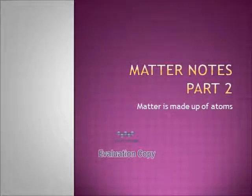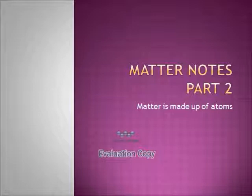Matter Notes Part 2. Matter is made up of atoms. In the previous note set, we talked about how matter is anything that has mass and volume — that was a good review. Now we're tying it into new content. Our second note set covers how the atom is the smallest piece of matter, the parts of the atom, the periodic table, how to get information from the table, and how to break down a compound into the different atoms that make it up.